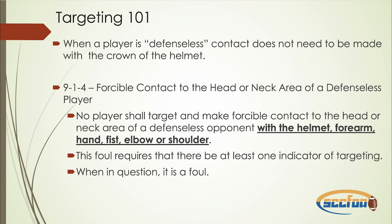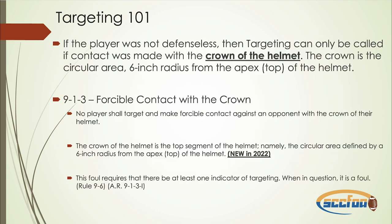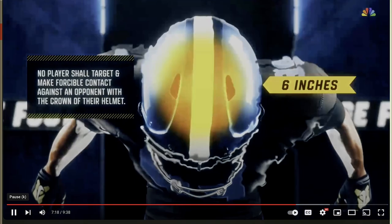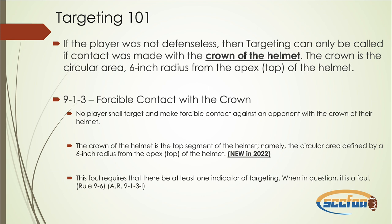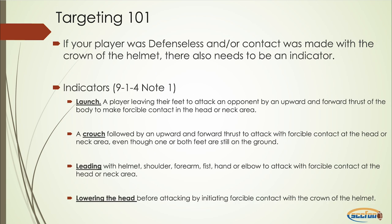If the player was not defenseless — does not meet any of the defenseless player criteria — then targeting can only be called if there is contact with the crown of the helmet, which NCAA defined last year as the circular area or six-inch radius from the apex or top of the helmet. So 9-1-3 is specific to forcible contact with the crown; 9-1-4 refers to contact with a defenseless player and forcible contact to the head or neck area. There also needs to be an indicator, noted in 9-1-4: a launch, a crouch, or leading or lowering the head.